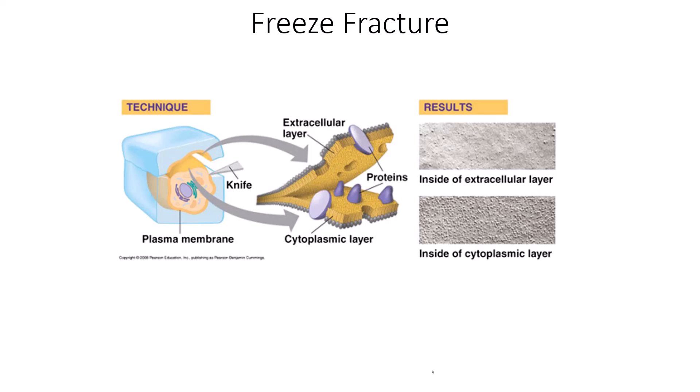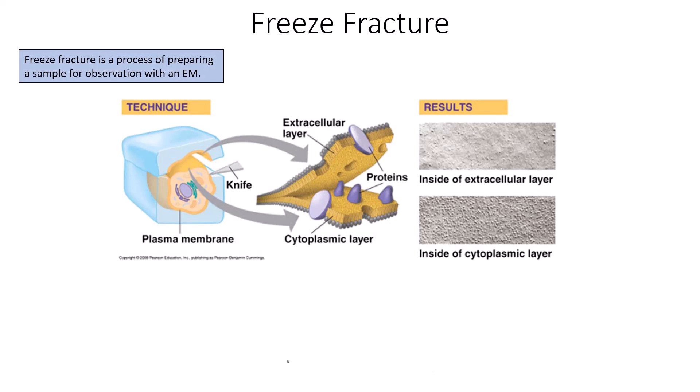In addition to the light microscope leading to the discovery of the cell and the electron microscope increasing magnification and resolving power, there are microscopy techniques that have furthered our understanding of the cell and its structural components. One of those is freeze fracture — a process of preparing a sample for observation with electron microscopy that makes our understanding of the structures we're looking at more clear.